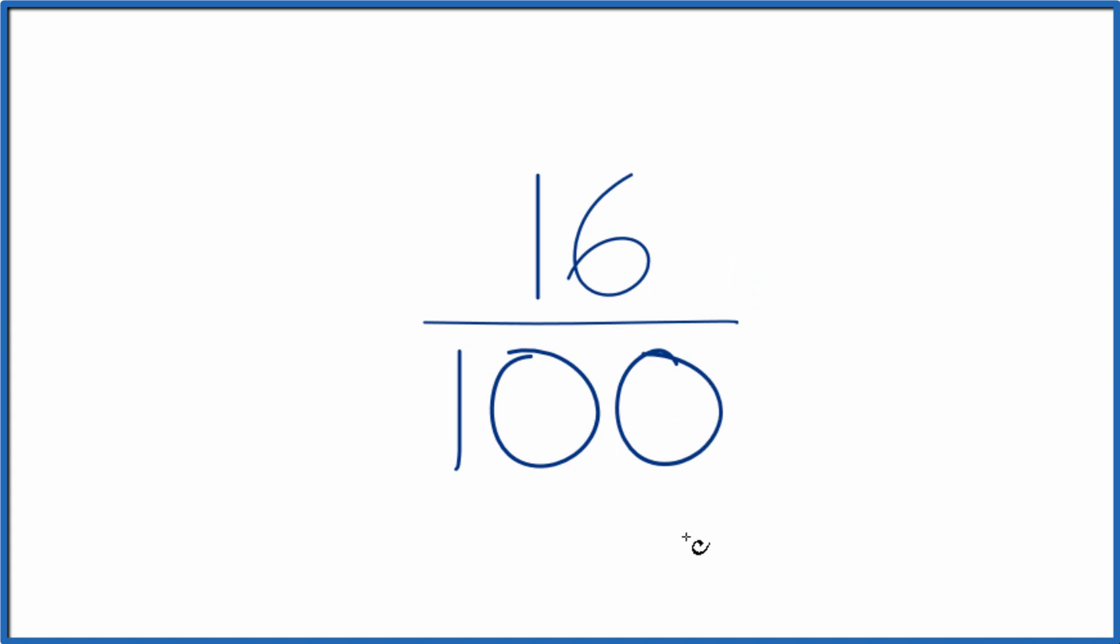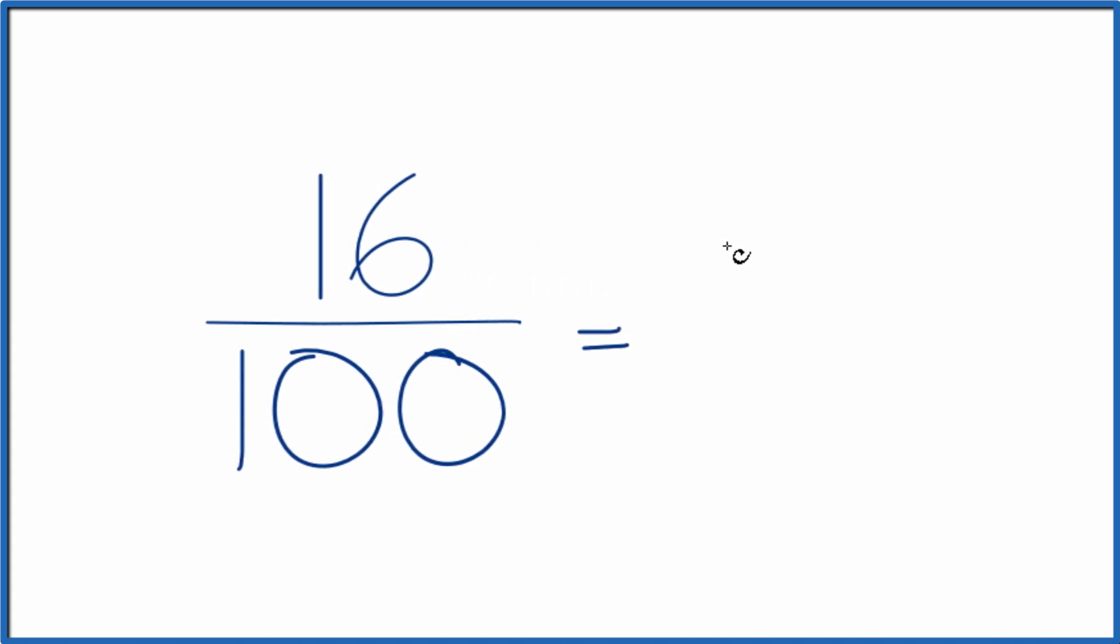Since 16 and 100 are both even numbers, let's just divide them both by 2. That might be the easiest way to start. 16 divided by 2 is 8. 100 divided by 2, that's 50. So we have 8 fiftieths. And that is a reduced form of the fraction 16 over 100.